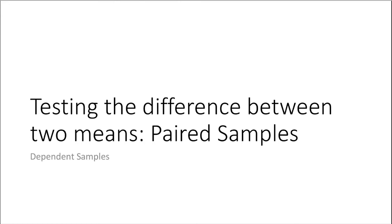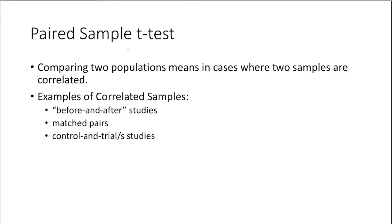For paired samples, we will be using the paired sample t-test, which is a direction of our t-test wherein we compare two population means in cases where two samples are correlated. Here are some examples of correlated samples.